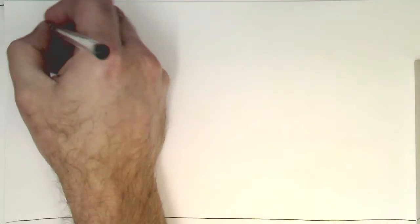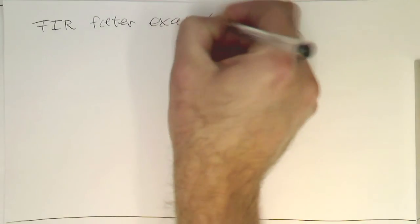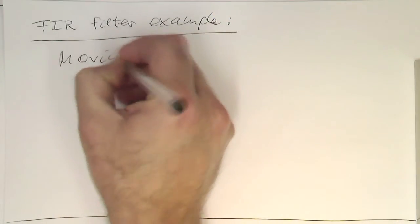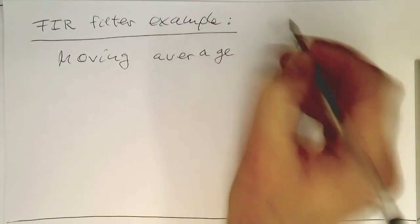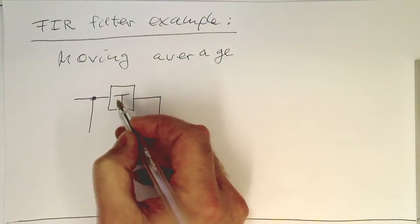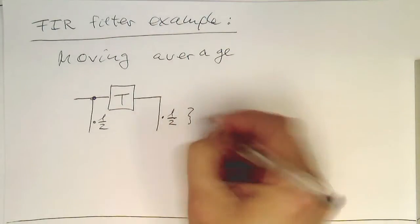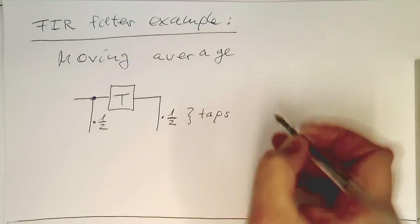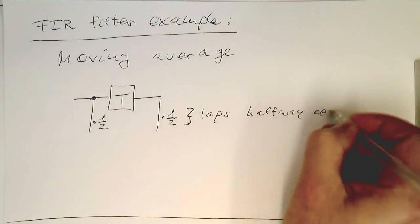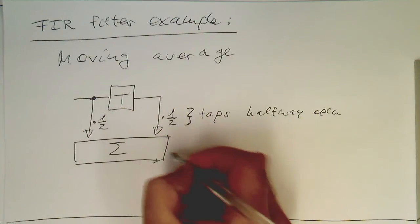So now let's do the next step: an FIR filter example, just to get an idea of how this whole thing works. The example is a moving average. In FIR terms, we've got just one delay step. We're multiplying this output here by half, and this here also by half. These are very often called taps. So after we've multiplied this with a factor of half, we just add this up and send it out.